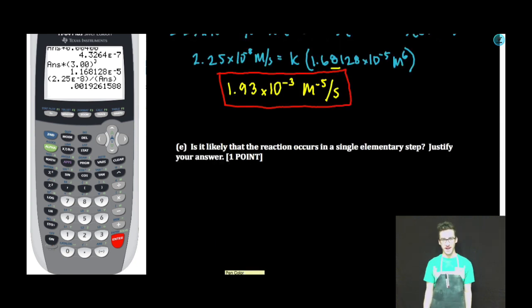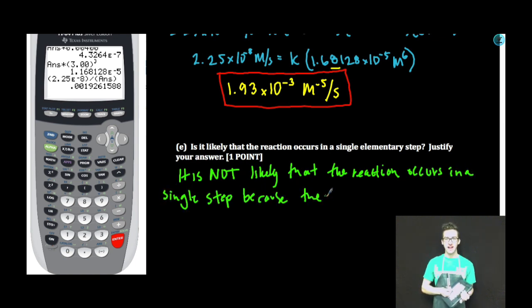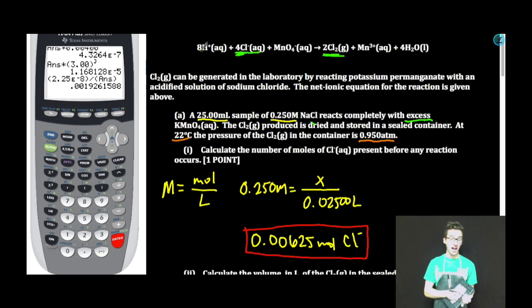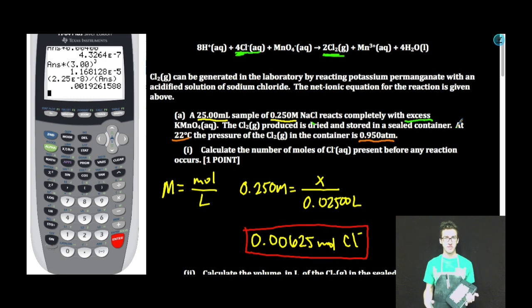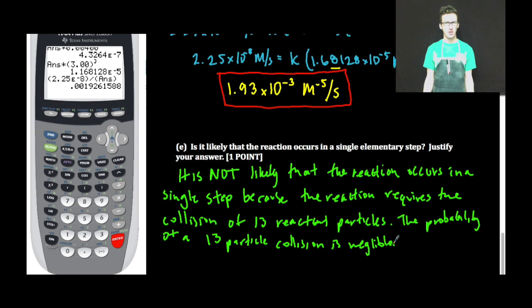Part E. Is it likely that the reaction occurs in a single elementary step? Justify your answer. It is not likely that the reaction occurs in a single step because the reaction requires the collision of 13 reactant particles: 8 hydrogen ions, 4 chloride ions, and 1 permanganate ion would all have to collide simultaneously. The probability of a 13-particle collision is negligible — most successful collisions occur between one or two particles, maybe three. We are done.